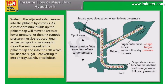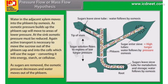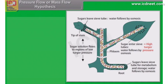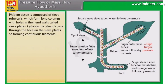At the sink, osmotic pressure must be reduced. Active transport is necessary to move the sucrose out of the phloem sap and into the cells which will use the sugar, converting it into energy, starch, or cellulose. As sugars are removed, the osmotic pressure decreases and water moves out of the phloem. Phloem tissue is composed of sieve tube cells, which form long columns with holes in their end walls called sieve plates.